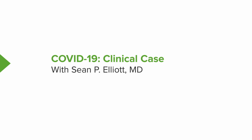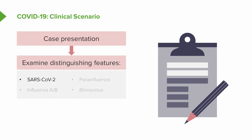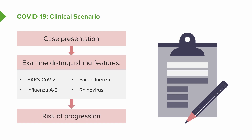Coronavirus infectious disease 19: a clinical case. In this session we're going to look at a clinical scenario with a case presentation and use that to examine distinguishing features which may help us to differentiate infection by SARS coronavirus 2, the cause of COVID-19, versus other respiratory infections currently circulating — those being influenza A or B, parainfluenza, rhinovirus, and even some atypical pneumonias.